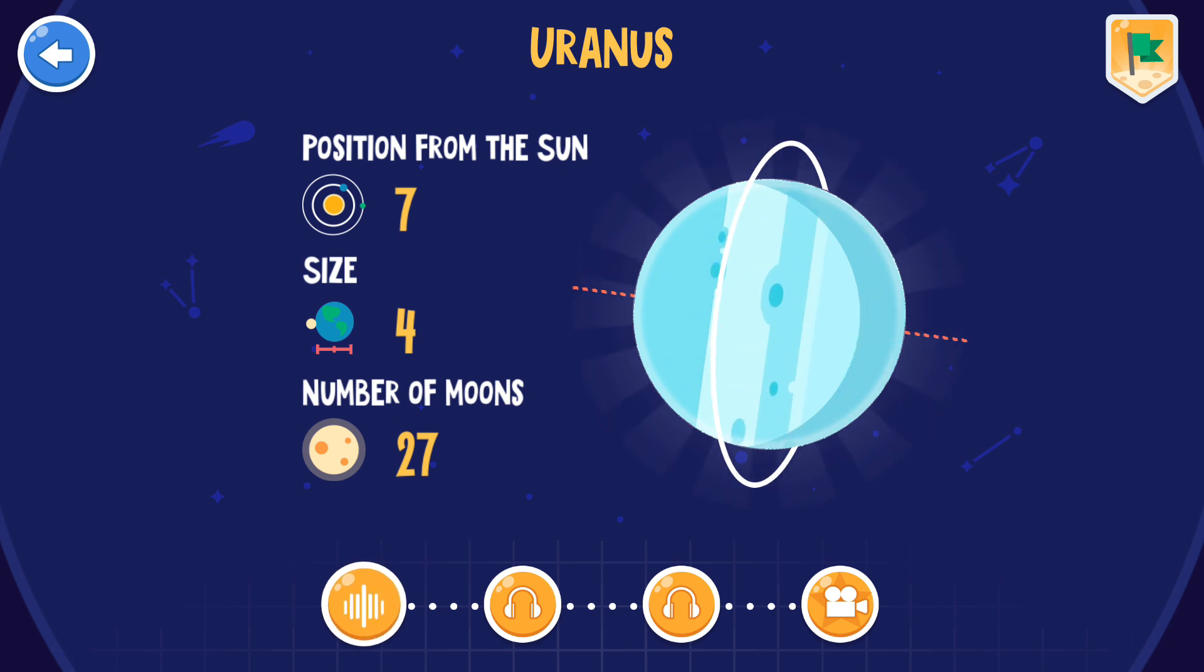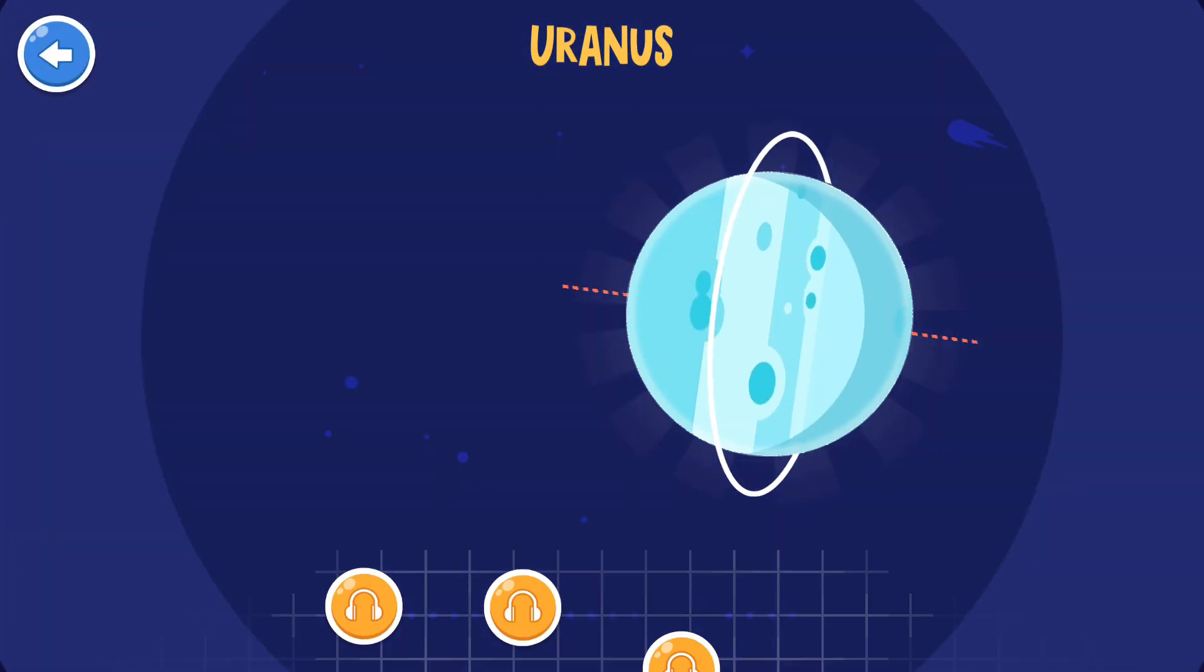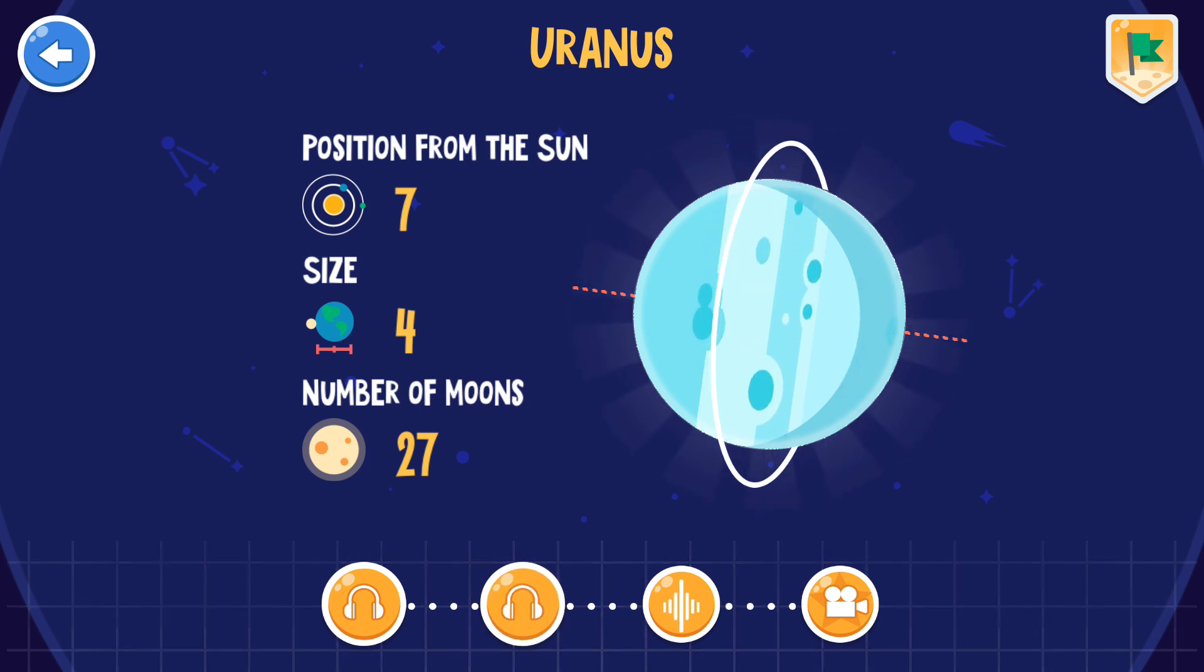Uranus spins on its side. Uranus is an extremely cold planet. Because of the tremendous planetary pressure of Uranus, there could possibly be trillions of large diamonds in or on the surface of this planet.